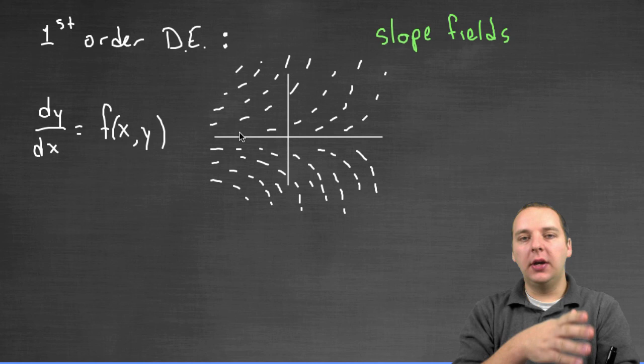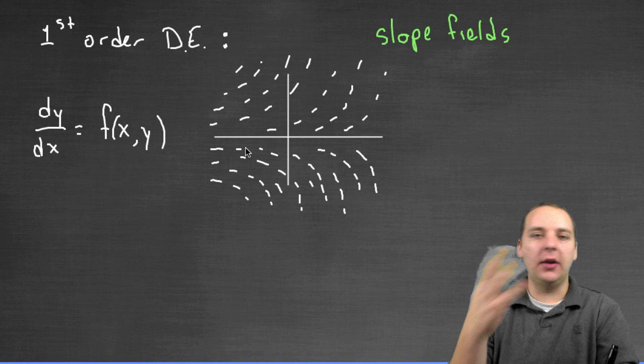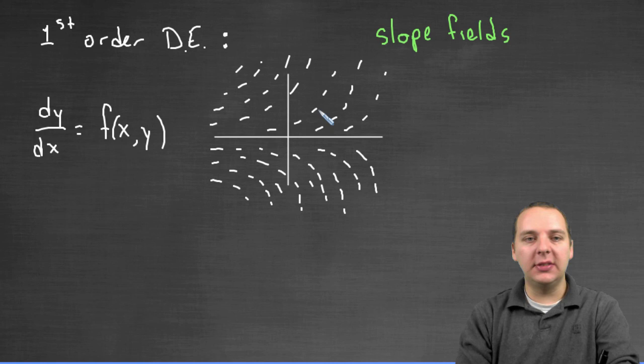These slope fields, they'll typically look like waves that either go up or go down or go around in a circular pattern, you know, they vary problem to problem, but they'll look something like this.